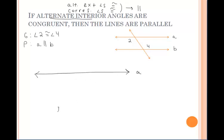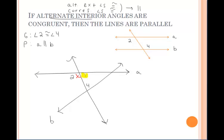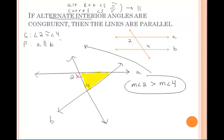Let's approach this in an indirect proof. So let's assume that lines A and B are not parallel, which means they would have to intersect at some point. I'm going to construct the transversal here and add in our angles 2 and 4. Angle 2 is an exterior angle of this yellow triangle, and angle 4 is a remote interior angle in that triangle. Based off of the theorem we just talked about, that means the measure of angle 2 must be greater than the measure of angle 4. But this contradicts our given, which states that angle 2 is congruent to angle 4. Therefore, our assumption is false, and the two lines A and B must be parallel.